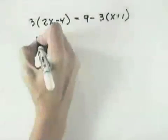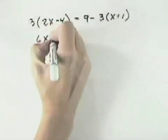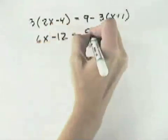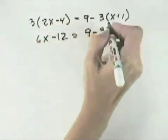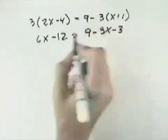So in this problem, we'll want to multiply out the parentheses first to get 6x minus 12 equals 9 minus 3x, and remember this negative will give us minus 3.